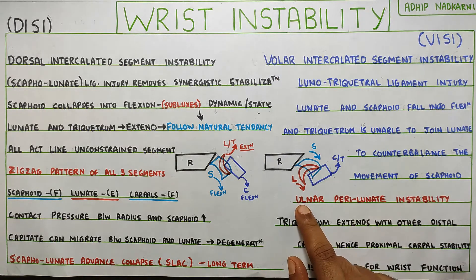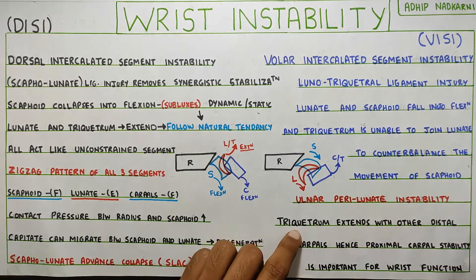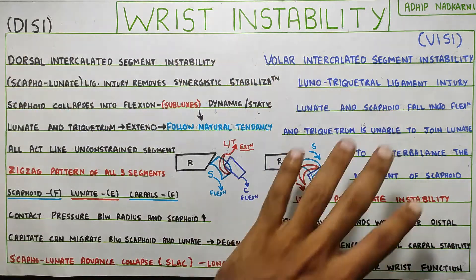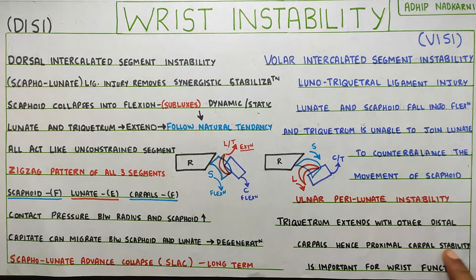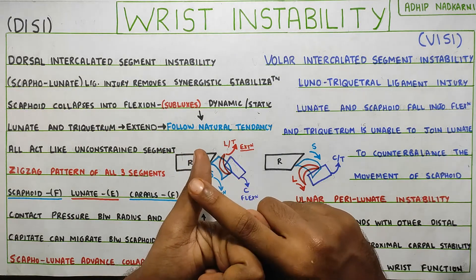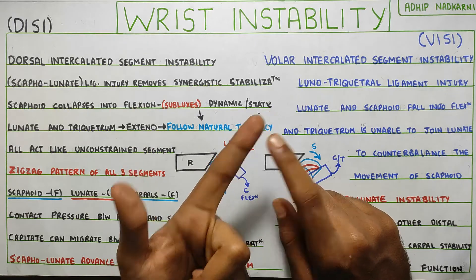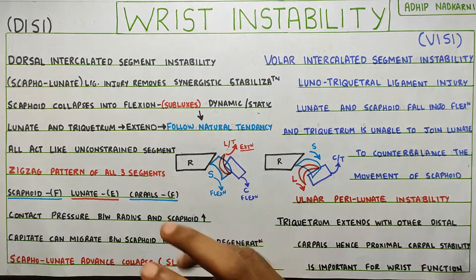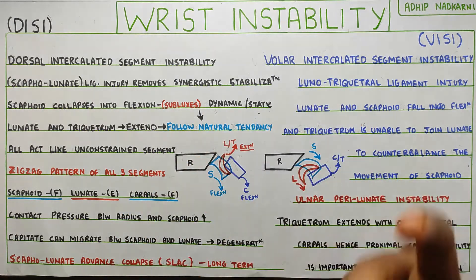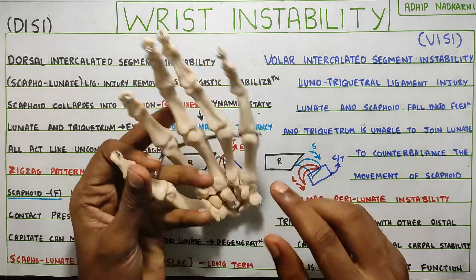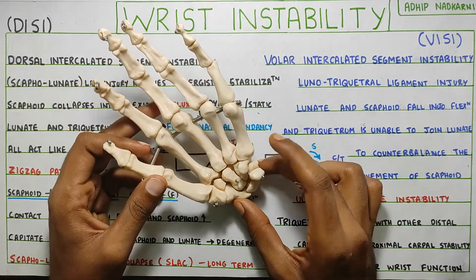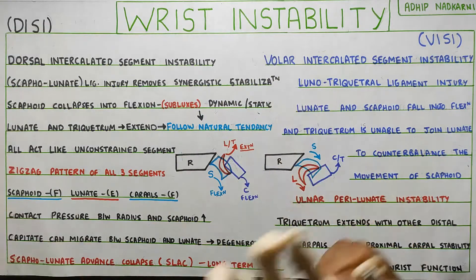VISI is also known as ulnar perilunate instability. The triquetrum extends with all the distal carpals. This shows us that proximal carpal stability is very important in wrist function. In the kinematics of wrist flexion-extension and radial and ulnar deviation, the proximal carpal bones — scaphoid, lunate, and triquetrum — play a major role in stabilizing the proximal row so that distal movement is much more stable.